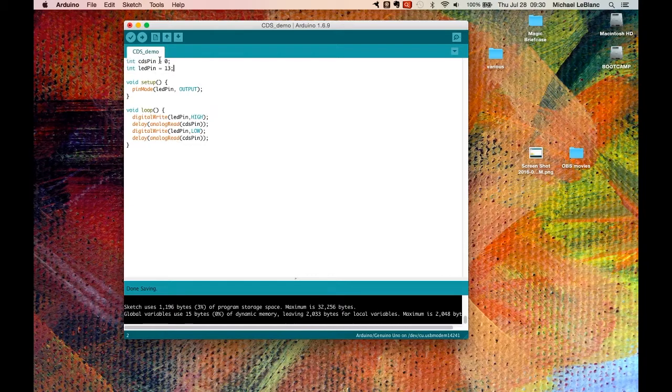It's called cdsDemo. I create two variables, or two actually they're constants in this case. It's an integer, and it defines the cds pin as 0, so that's analog 0, and the LED pin as pin 13. So we'll actually see it on the Arduino device. We have only one thing in the setup. It's to set the LED pin to output. We have to do this for the digital pins, but we don't have to do it for the analog pins, because the analog pins are input only.